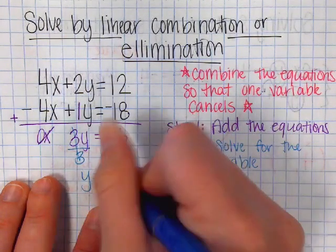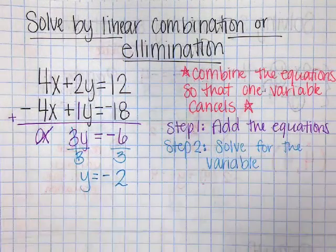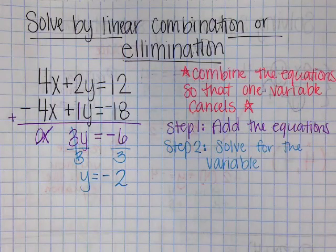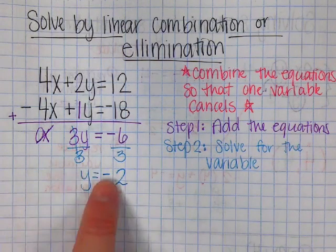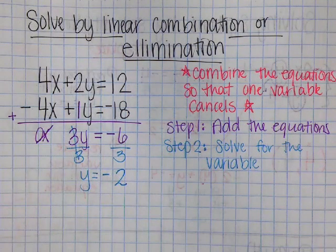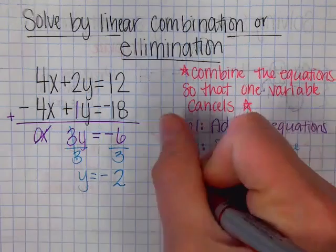So y equals negative 6 divided by 3. A negative divided by a positive is a negative. 6 divided by 3 is 2. Now this is looking just like what we did the other day, or what we've been doing with substitution.